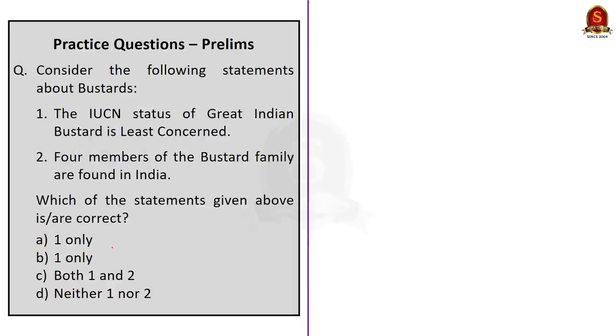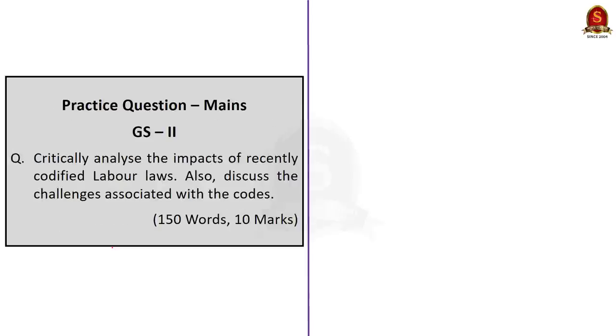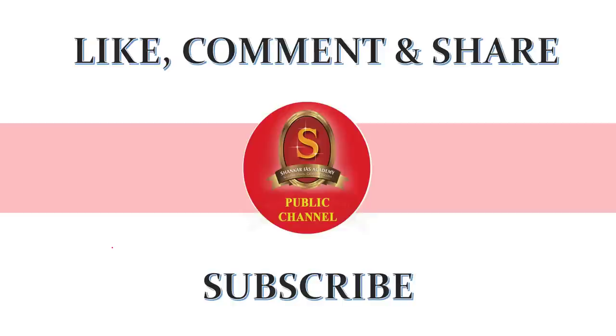Coming to the final question, this is the quiz question for you. Consider the following statements about Bustards: The IUCN status of Great Indian Bustard is least concerned and four members of the Bustard family are found in India. Think and attempt this question and post your answer in the comment section. I have given a mains question here for your practice. Interested aspirants, write it and post it in the comment section. If you have any queries related to the articles that we discussed today, post that also in the comment section. And with this, we have come to the end. If you find the video useful, like, share and comment and do subscribe to Shankar IAS Academy's YouTube channel for further updates. Thank you.